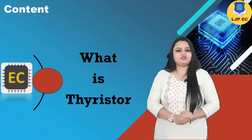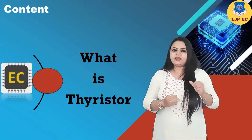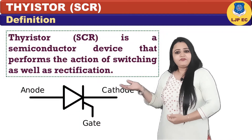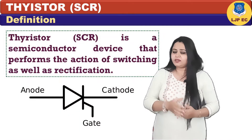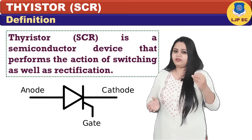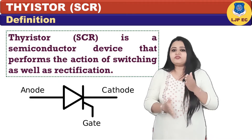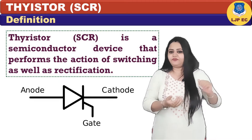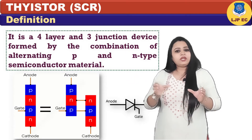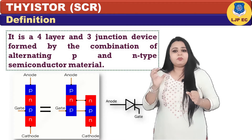Now let's move to the most important component of industrial electronics, that is the thyristor, also known as SCR. The definition of SCR or thyristor is: it is a semiconductor device that performs the action of switching as well as rectification.